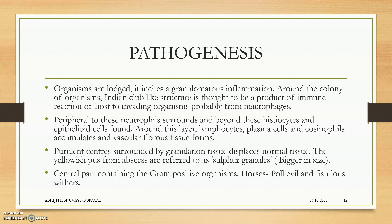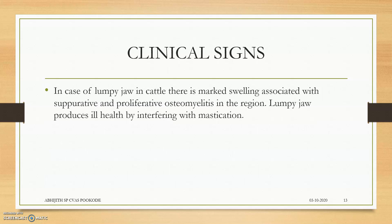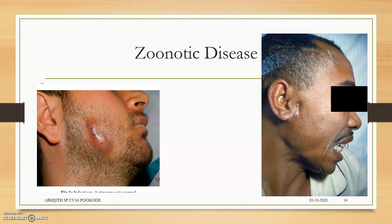It may proliferate in the bony tissues and produce ostitis and also osteomyelitis. In clinical signs, there will be marked swelling associated with suppurative and proliferative osteomyelitis in the region. The lumpy jaw produced will hamper feeding by interfering with mastication.